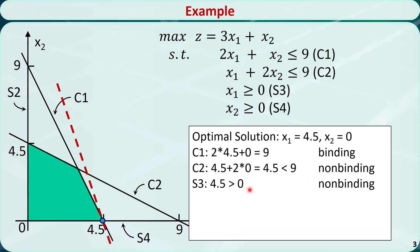For s3, we have 4.5 is greater than 0, which is the right-hand side. So s3 is non-binding.